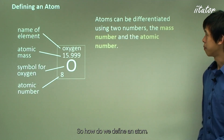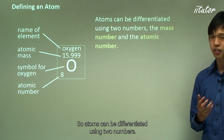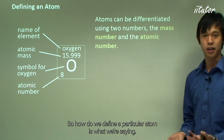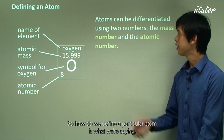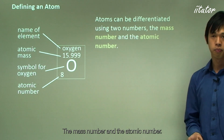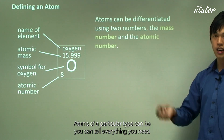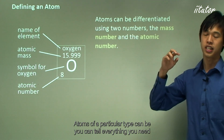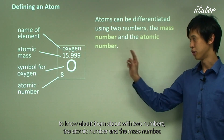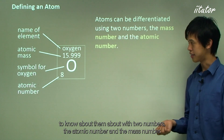So how do we define a particular atom? Atoms can be differentiated using two numbers: the atomic number and the mass number. Those two numbers tell you everything you need to know about an atom.